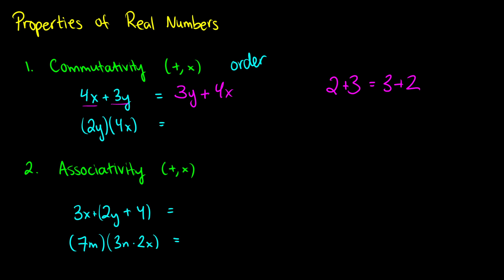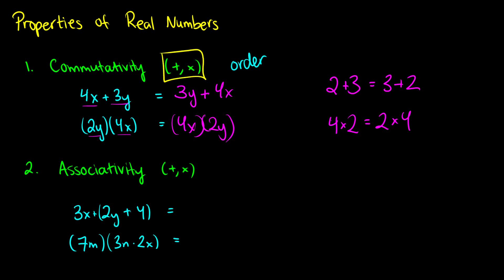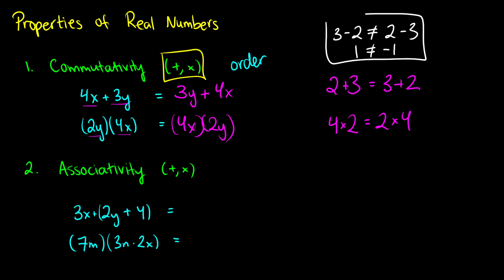For multiplication, like 2y times 4x, it doesn't matter if we multiply 2y by 4x first or 4x by 2y — it makes no difference. It's the same way that 4 times 2 is the same as 2 times 4; both equal 8. However, this only applies to addition and multiplication. With subtraction, 3 minus 2 is not equivalent to 2 minus 3, because 3 minus 2 equals 1 and 2 minus 3 equals negative 1. So subtraction is not commutative.